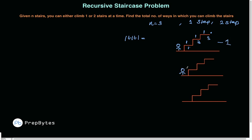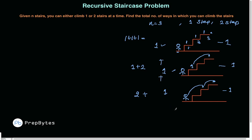Another way: from the start, climb one step, then directly jump two steps to reach the top — so that's 1 + 2. A third way: from the start, directly jump two steps, then take one step — that's 2 + 1. So for n=3, the total number of ways is 3. Try it yourself to confirm there are no other options.